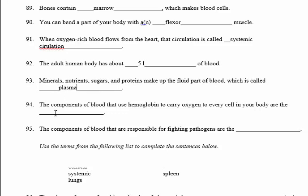Number 94: the components of the blood that use hemoglobin to carry oxygen to every cell in your body are the red blood cells. Number 95: the components of the blood responsible for fighting pathogens are the white blood cells.